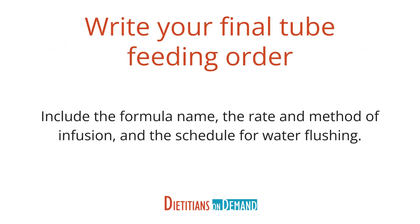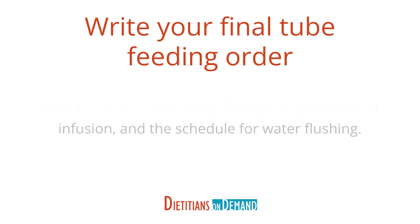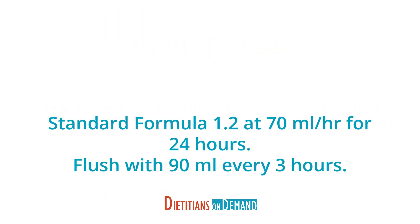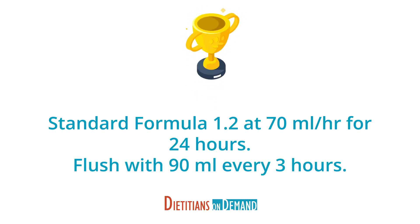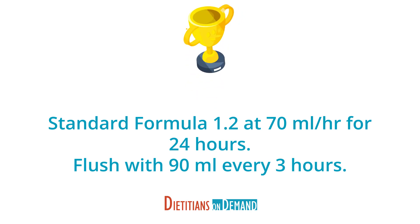Next, let's write your final tube feeding order. Include the formula name, the rate, the method of infusion, and the schedule for water flushing. Our final order will read: Standard formula 1.2 at 70 milliliters per hour for 24 hours. Flush with 90 milliliters of water every three hours. You did it!